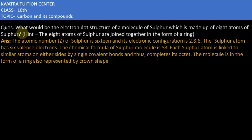Hello everyone, the question here is what would be the electron dot structure of a molecule of sulfur which is made up of 8 atoms of sulfur?